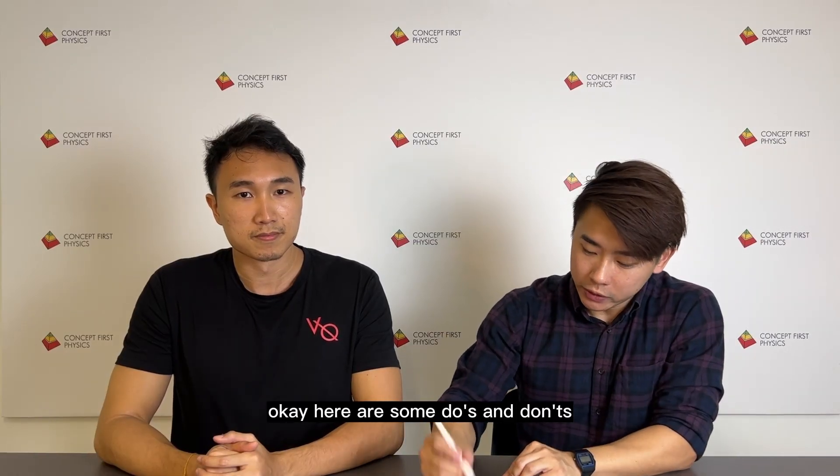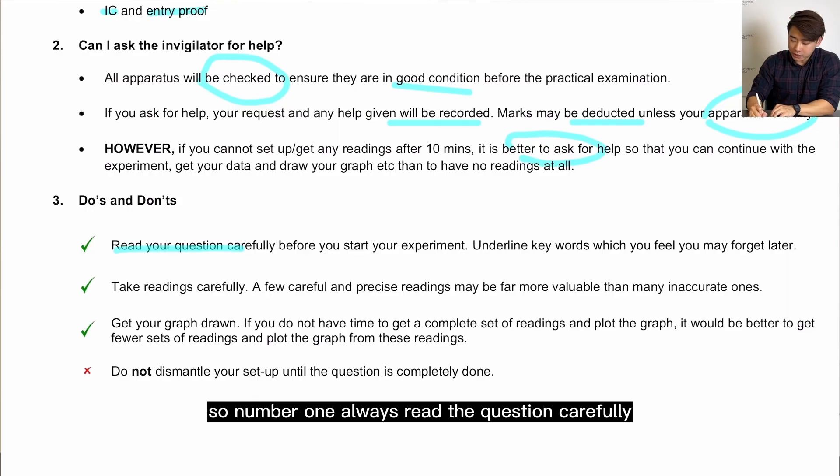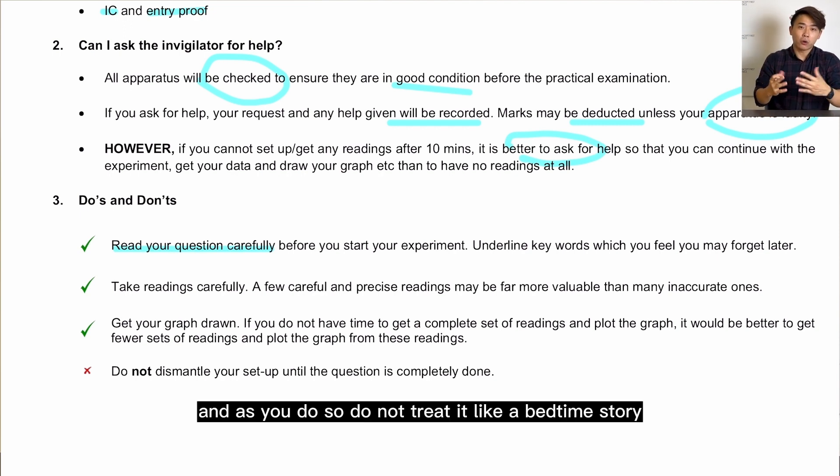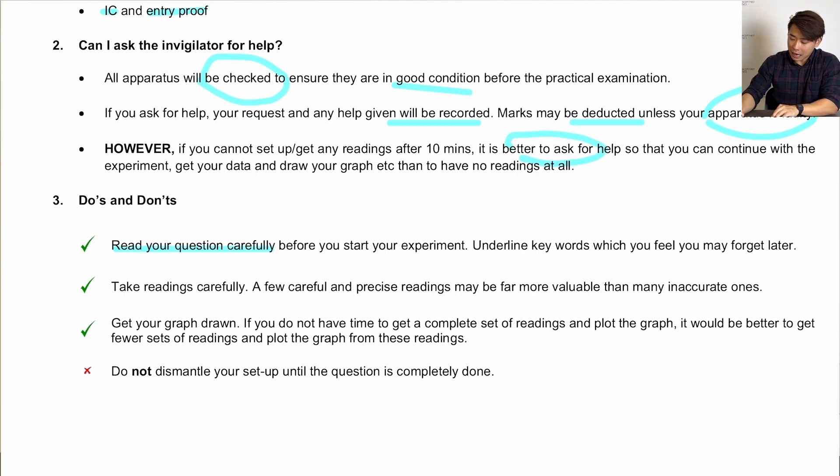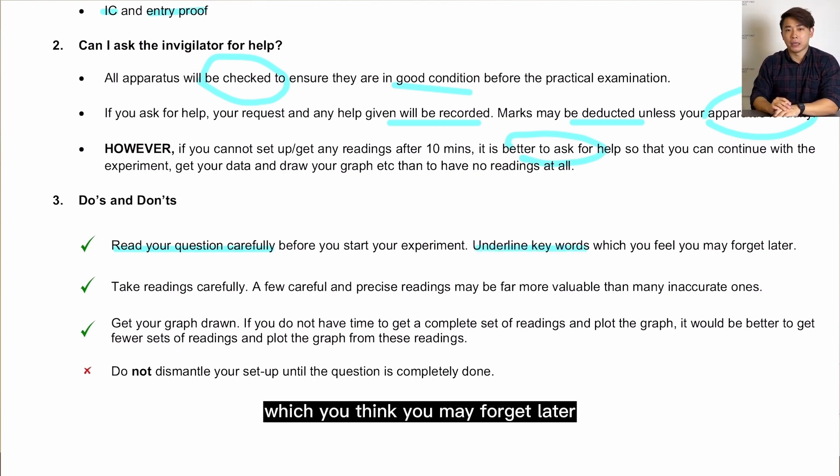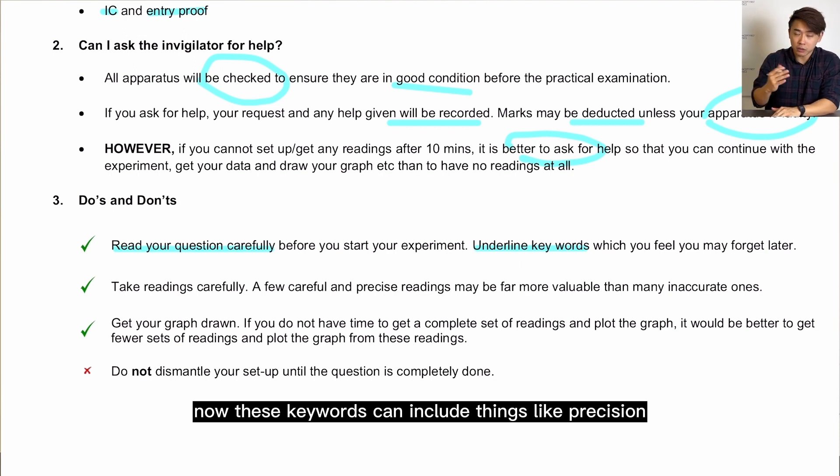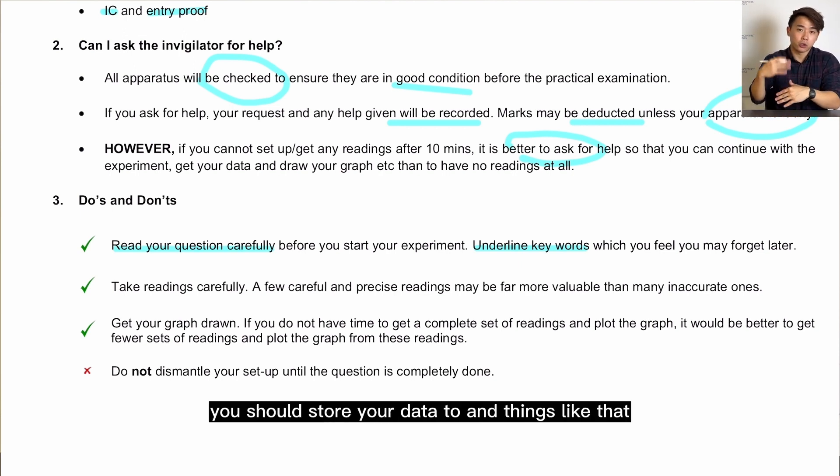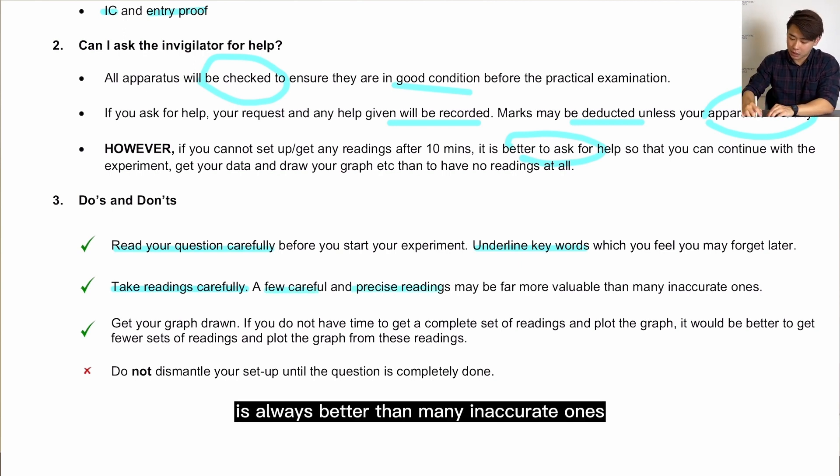Okay, here are some do's and don'ts. So number one, always read the question carefully and as you do so, do not treat it like a bedtime story. You are supposed to visualize what is happening. Underline the keywords which you think you may forget later. Now these keywords can include things like precision, how many DP you should store your data to, and things like that. Next, when you take readings, do them carefully. A few careful and precise readings is always better than many inaccurate ones. Now even if time comes straight, get your graph drawn because if you don't get your graph drawn, you will lose the entire marks for that component.